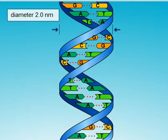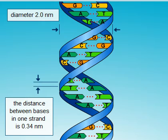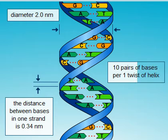Its diameter is 2.0 nm. The distance between bases in one strand is 0.34 nm. There are 10 bases to each twist of the helix.